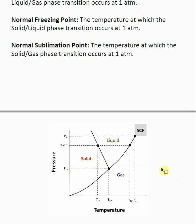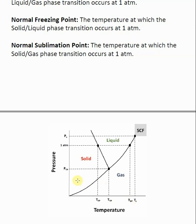To find the normal freezing point and normal boiling point, find one atmosphere on the y-axis and track across. Where we cross the fusion line, that is the normal freezing point — drop down to the x-axis to read the temperature. Where we cross the vaporization line, that is the normal boiling point. In this case, we cannot have a normal sublimation point because we do not cross the sublimation line at one atmosphere.